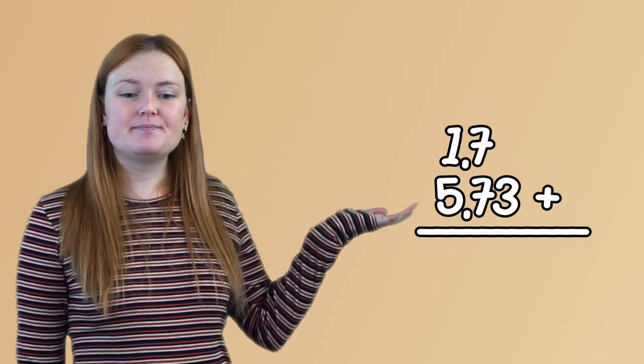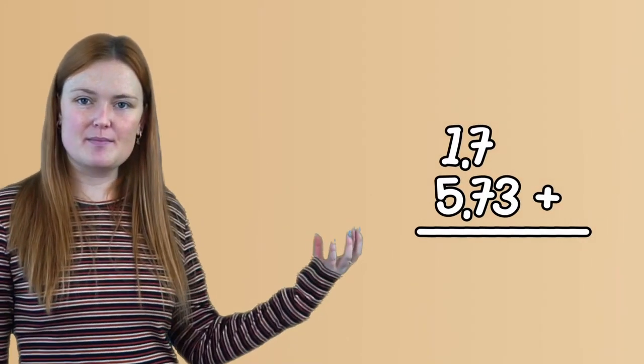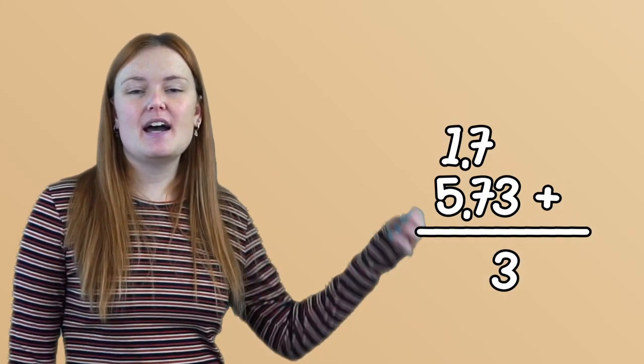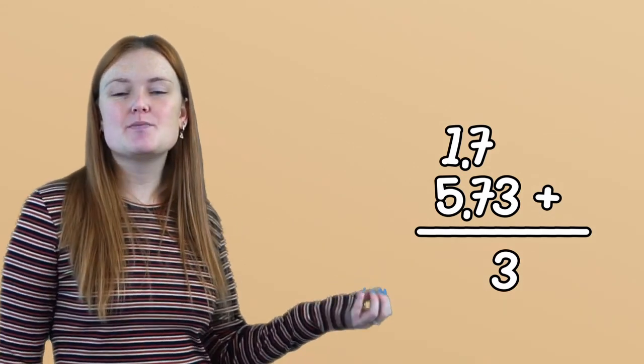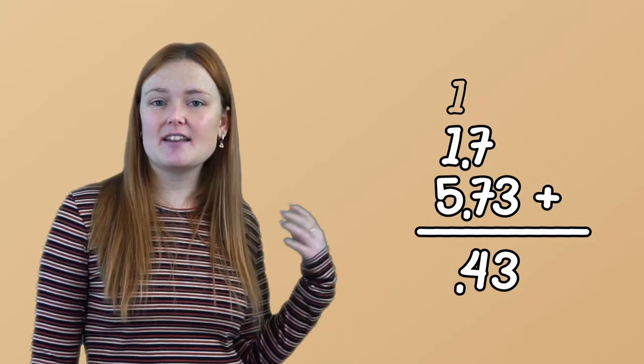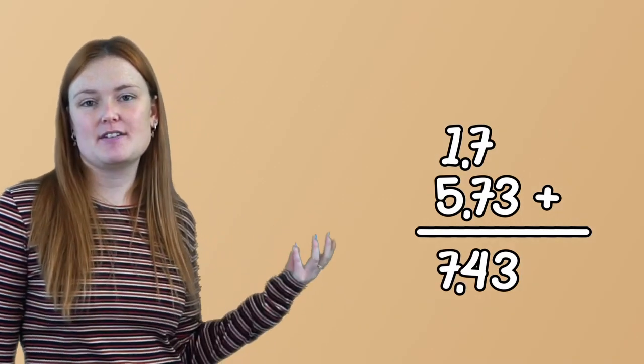So when I add them, I'm just going to go down the columns. So I add 0 and 3 to get 3. I add 7 and 7 to get 14, which means I pop the 4 in and I carry the 1. I then do 1 plus 5 is 6 and add the one that I carried to get 7. So my answer is 7.43.